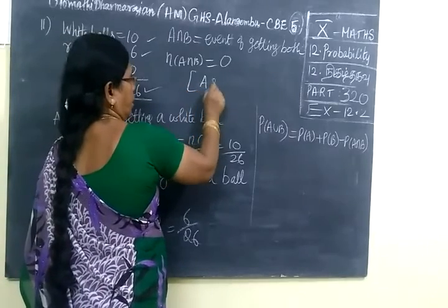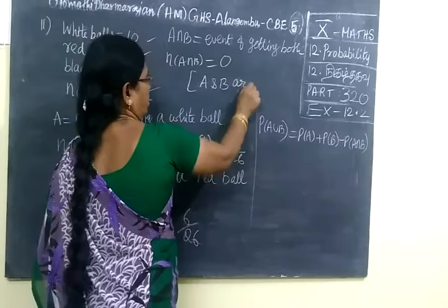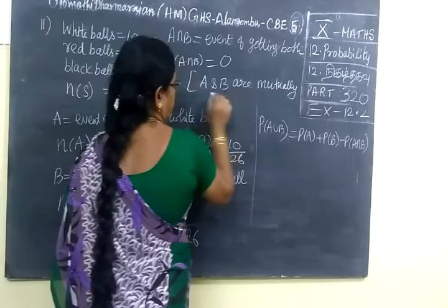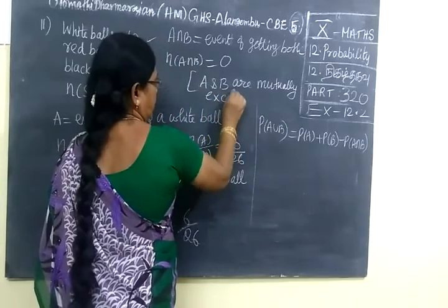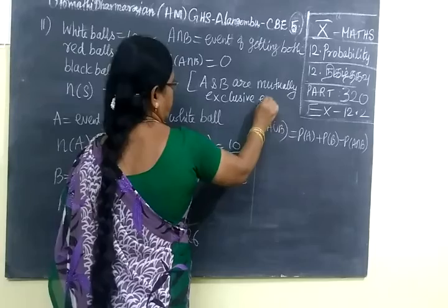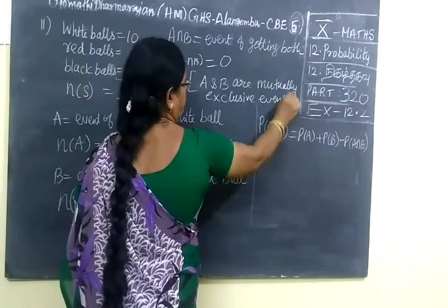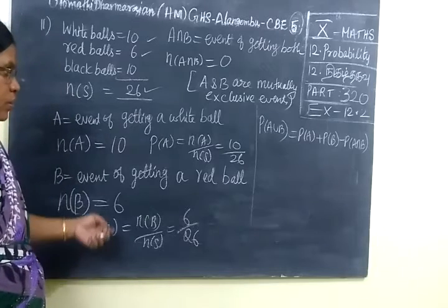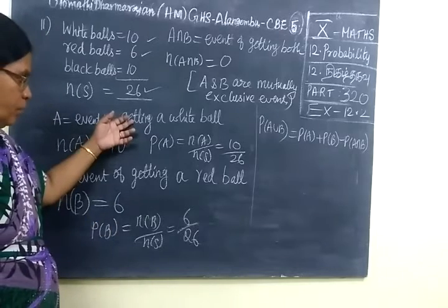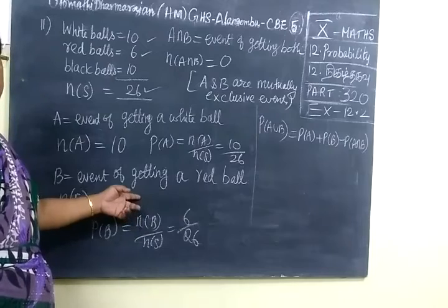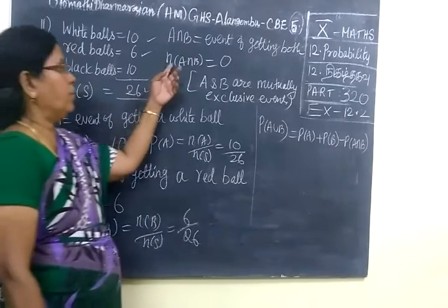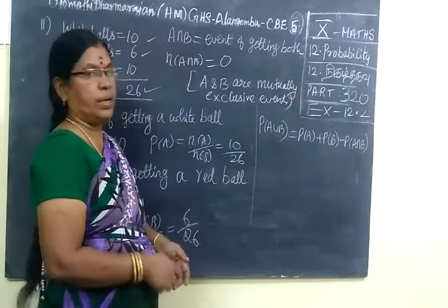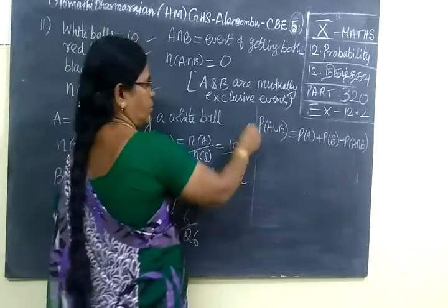Because A and B are mutually exclusive, a ball cannot be both colors. That means n(A intersection B) = 0, meaning no common elements.